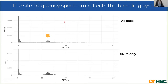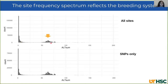This is the site frequency spectrum for all sites and for SNPs only. The site frequency — or allele frequency spectrum — is the distribution of allele frequencies of a given set of loci in a population. Starting with an inbred family compared to human data, you can see another peak at 50% of frequencies, which matches the two parental inbred strains and the breeding system. This spectrum matches our input data.